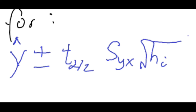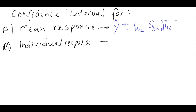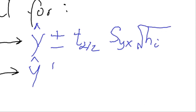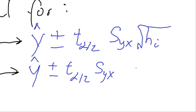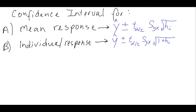Now for B, the confidence interval for an individual response. The formula starts the same way: y-hat plus and minus t of alpha divided in half, times the standard error syx. Here's where it's different — we multiply by the square root of 1 plus h sub i, instead of just the square root of h sub i.